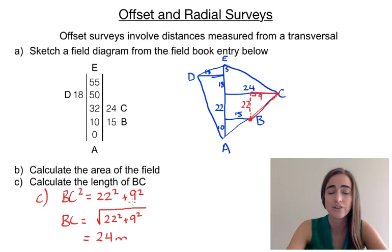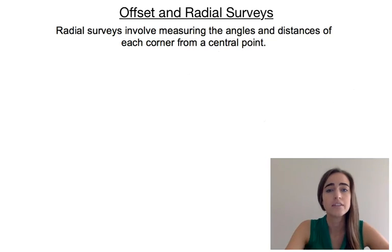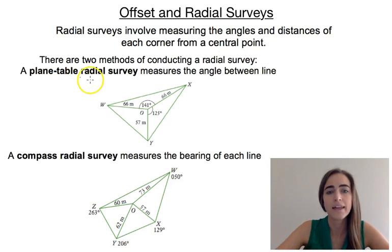Let's have a look at radial surveys now. So radial surveys involve measuring the angles and distances of the corners of a field from a central point. And there's two different ways that we can do that. The first way is called a plane table radial survey.